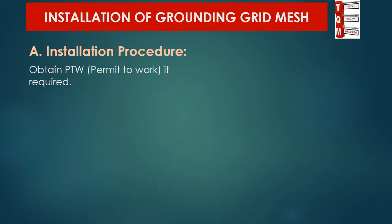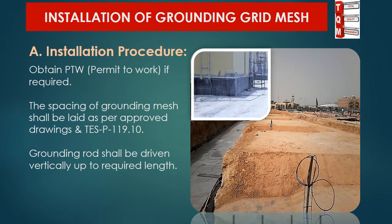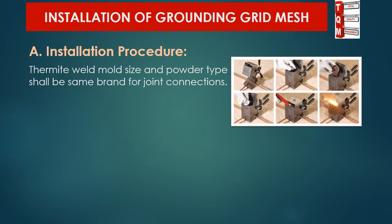If required, obtain a permit to work from the competent authority before starting the grounding mesh activity. The spacing of the grounding mesh varies from 3 meters to 15 meters as per soil conditions, but shall be laid as per approved drawings. The grounding rod shall be driven vertically up to the required length and height. Take care when performing joint welding that the thermite weld mold size and powder type shall be the same brand for joint connections.